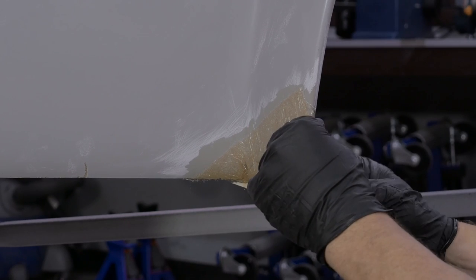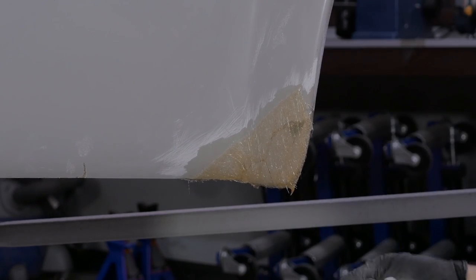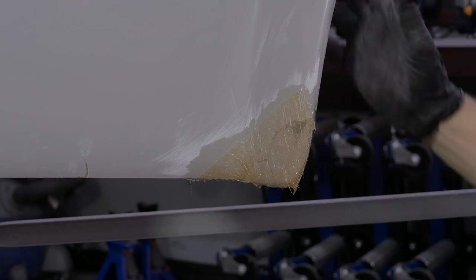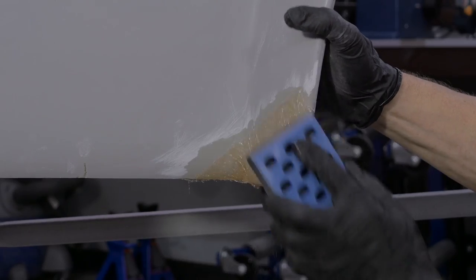After the resin has dried for 20 to 30 minutes, we can finish up roughing in the repair and getting the contours, corners, and edges perfectly aligned.